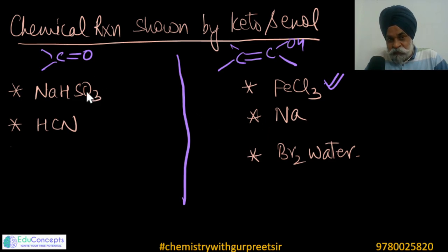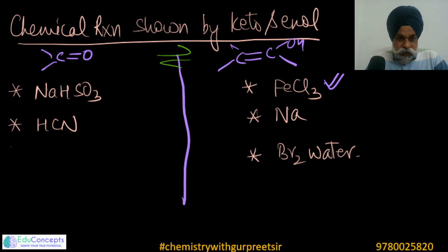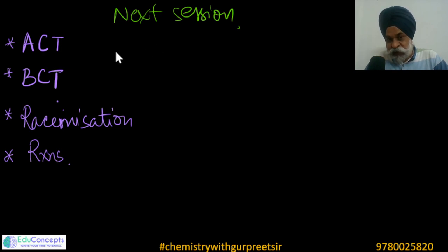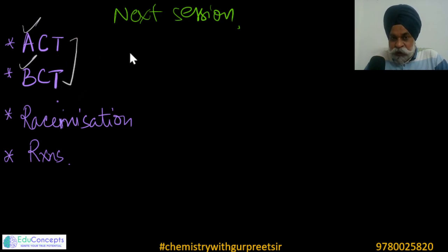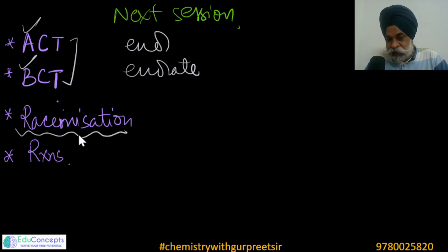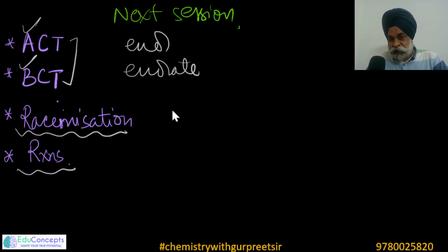These are the reactions through which the keto-enol equilibrium can be probed chemically. In the next session, what remains is acid- and base-catalyzed tautomerism — how acid and base catalyze enol and enolate formation — and we'll examine kinetic enolate formation versus thermodynamic stability of enolates, and reactions based on the enol or enolate part, including racemization. These topics will be covered in the next one or two videos. Thanks a lot, have a nice day, stay safe.